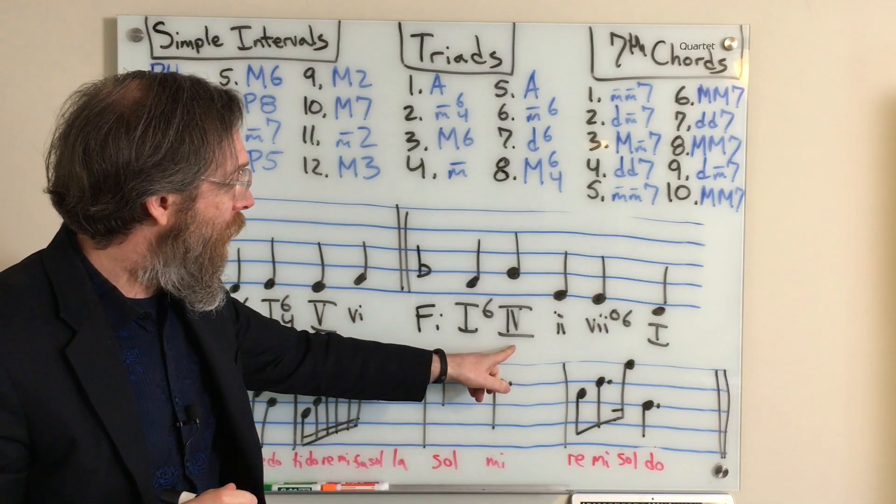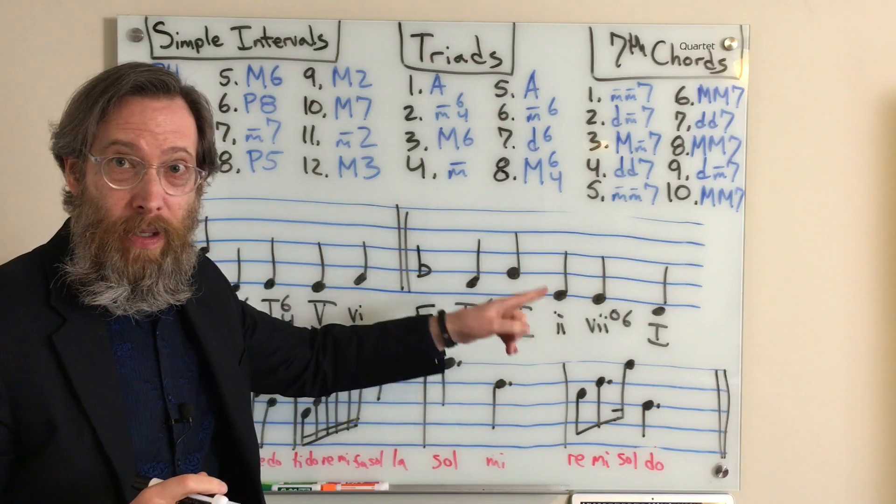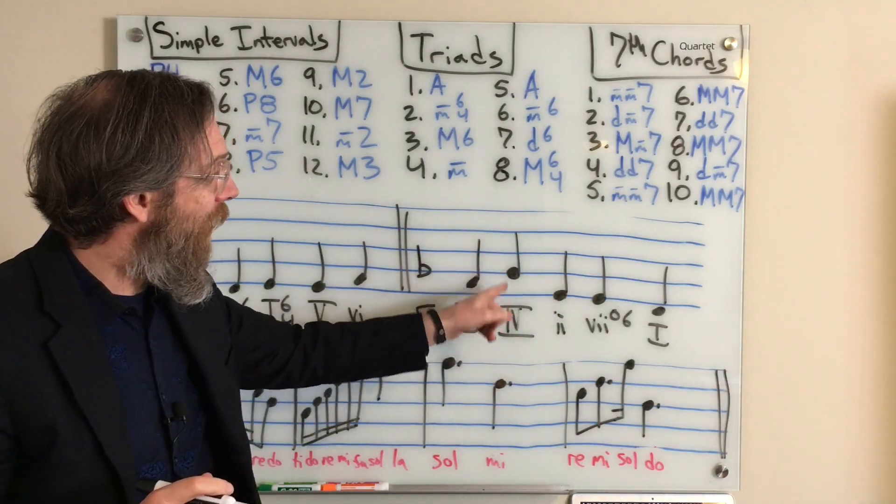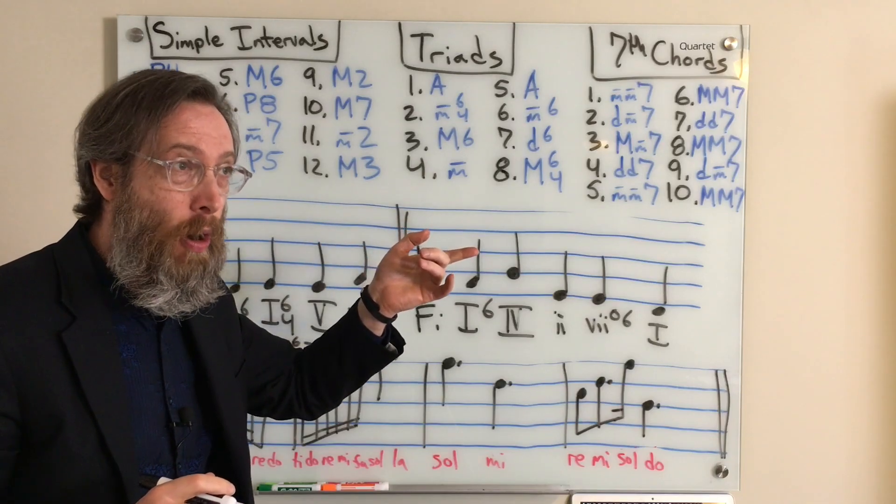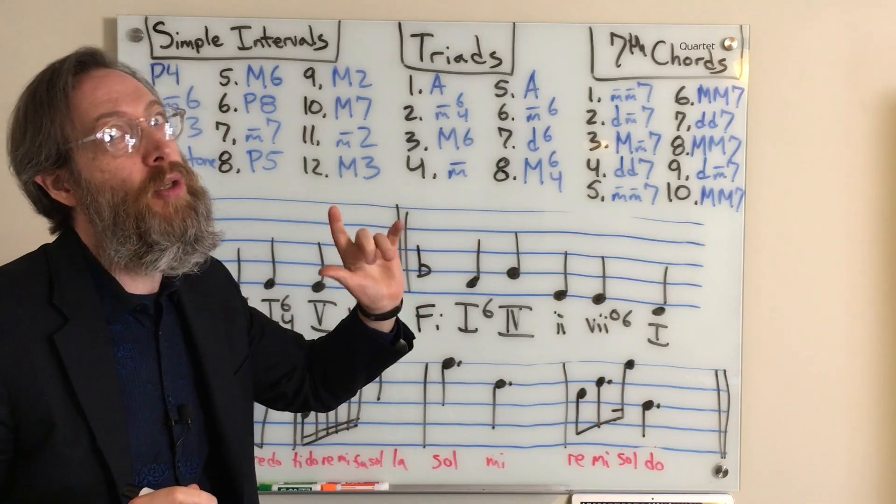So this could have been two six to two in root position. And the way you distinguish is by saying, okay, when you get to this chord, is it a major triad, in which case it's four, or is it a minor triad, in which case it would be two.